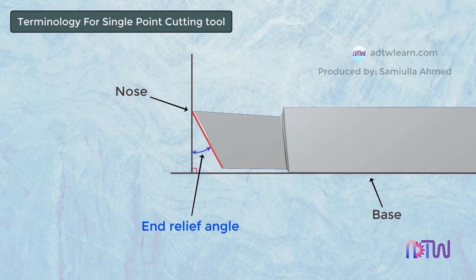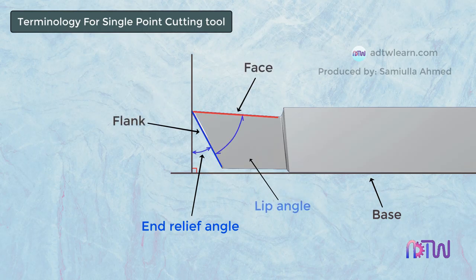The angle between the face of the tool and the ground end of the flank is called the lip angle of the tool. Usually this angle is between 60 degrees to 80 degrees.